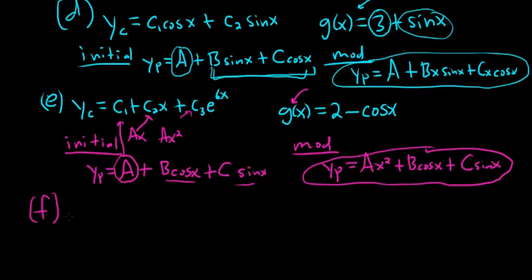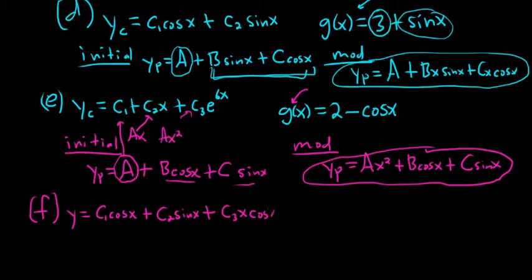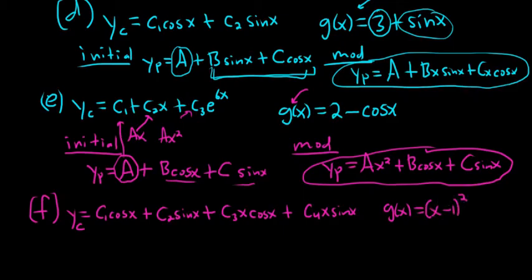Example F. Yc equals C1 cosine x plus C2 sine x plus C3 x cosine x plus C4 x sine x. That's our Yc. And then the right-hand side of our DE is g of x equals the quantity x minus 1, squared. We always look at g first to make our initial guess.